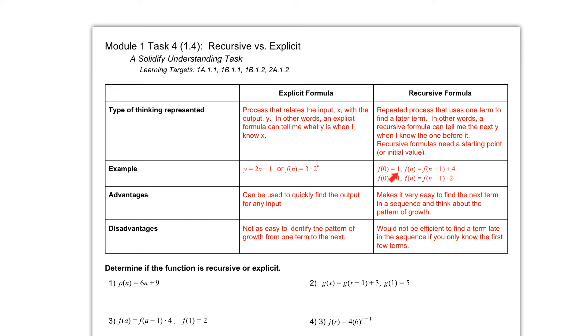Recursive formula examples. So we have f of 0 equal to 1, and then f of n is equal to f of n minus 1 plus 4. So this f of 0 equals 1, this indicates our first term, which will be helpful, because we're going to need that previous term to find the next one.